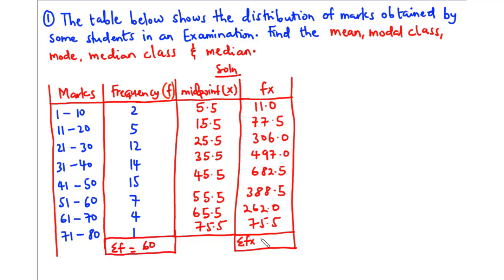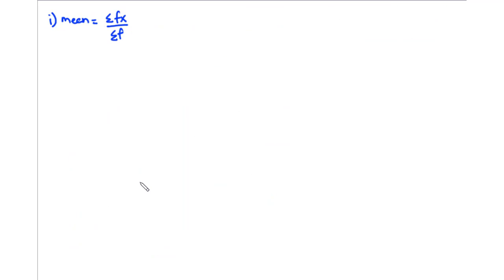Now let's find the summation of fx by adding all the fx values: 11.0 plus 77.5 plus 306.0 plus 497.0 plus 682.5 plus 388.5 plus 262.0 plus 75.5 gives 2300. So summation of fx is 2300. Now 2300 divided by 60 is 38.33. So this is the mean.